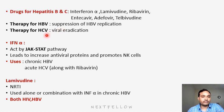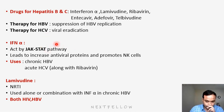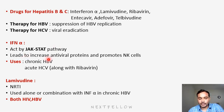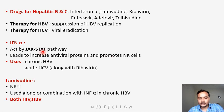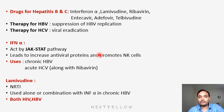The first drug is interferon alpha. Interferon alpha acts by the JAK-STAT pathway — this is an MCQ point. Interferon alpha acts by which pathway? JAK-STAT pathway. The main mechanism: the JAK-STAT pathway increases antiviral proteins and it is helpful to form natural killer cells, which will kill the viral particles.